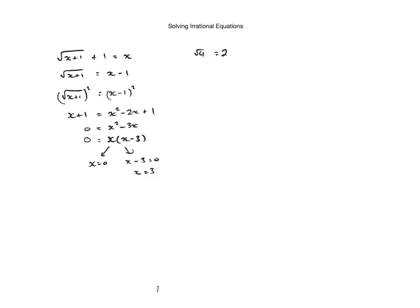Now, we check our solution. So let's just check x is equal to 0. If we put that in, we get root of 0 plus 1 plus 1 is equal to 0. Well, 0 plus 1 is the square root of 1, which is just 1, plus 1 is equal to 0.